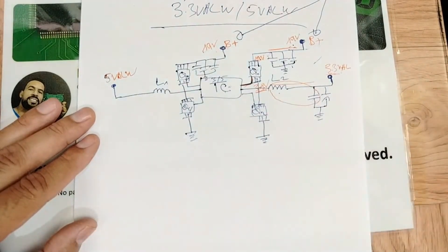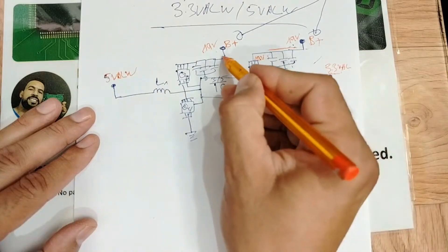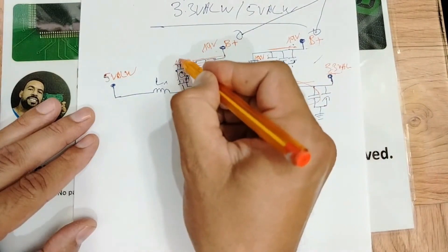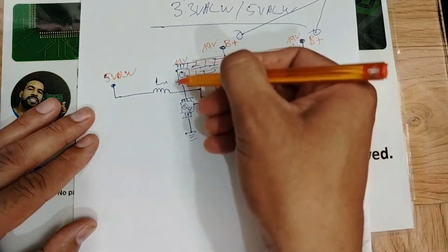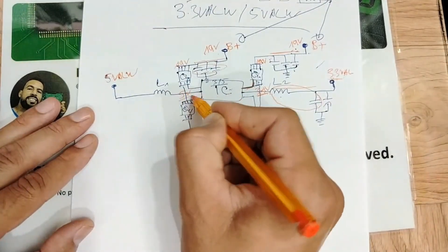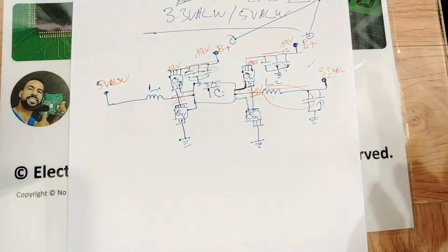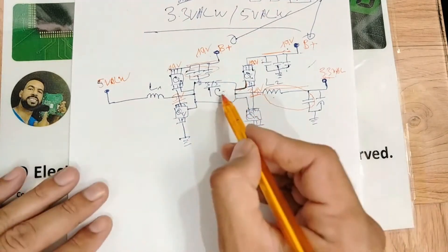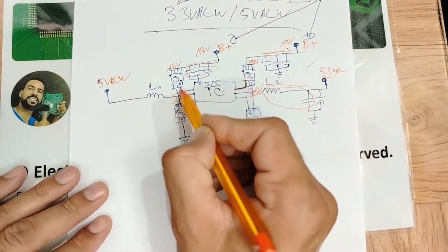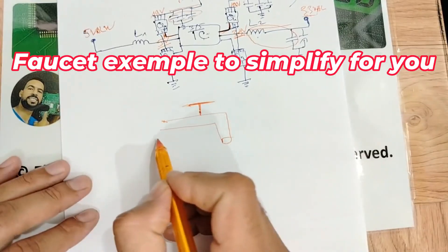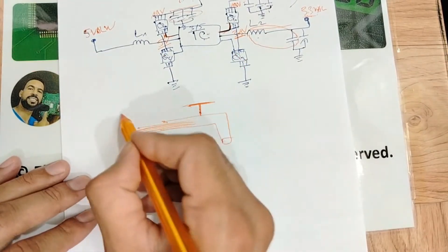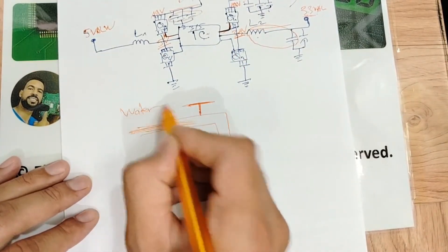The same 19 volts will pass through seven capacitors to be filtered, then be applied to the MOSFETs. Here we will get 5 volts. Why do we have 19 volts here and get 5 volts? How does this happen? Because of the IC — because of this control signal.